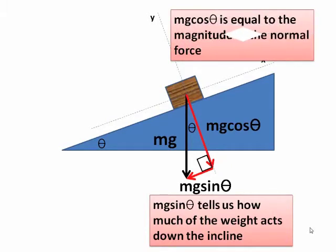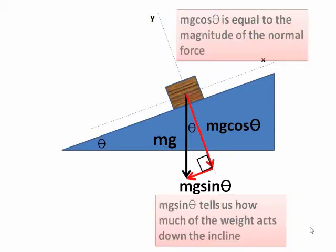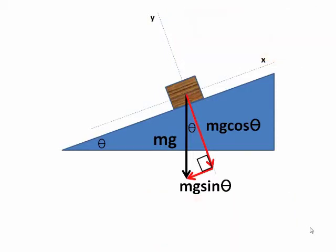mg cos theta is the magnitude of the normal force. Now it is acting directly into the incline at 90 degrees. That is how much of the weight is acting in, therefore the reaction force is mg cos theta, which is the definition of the normal.